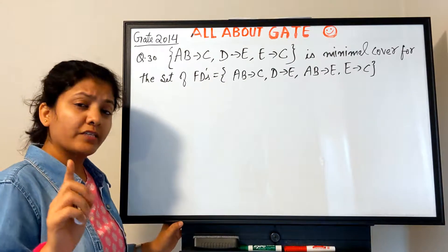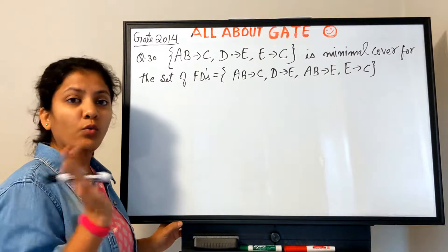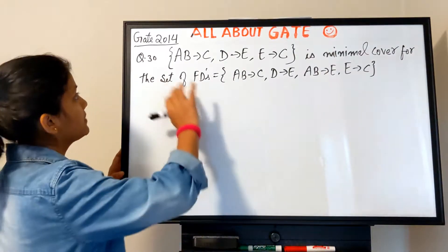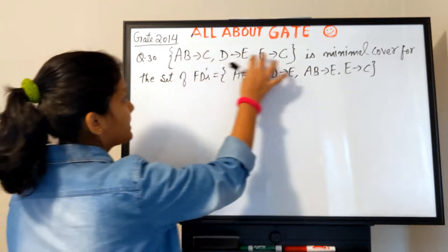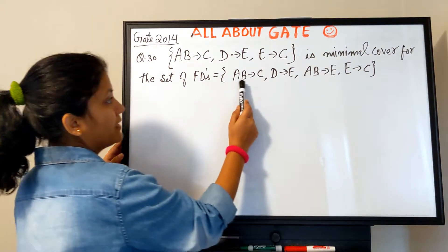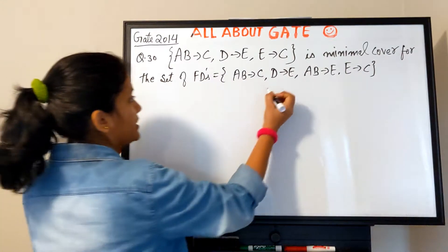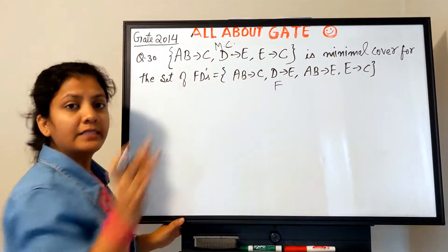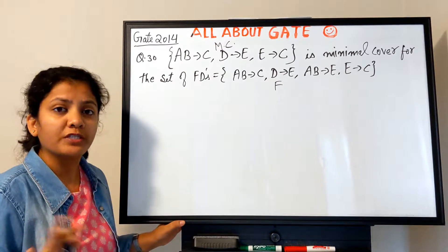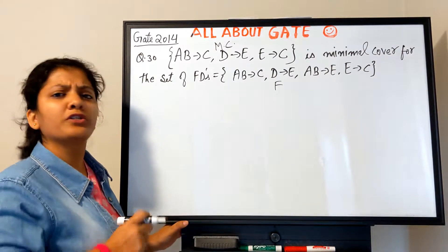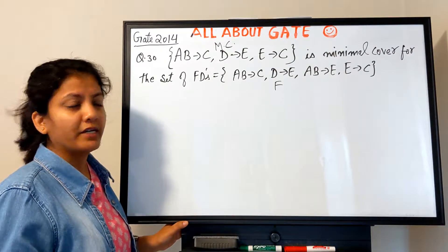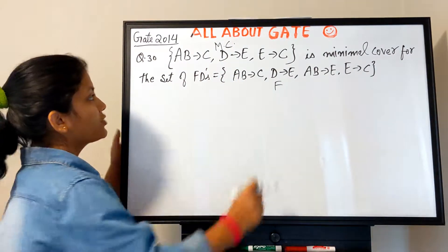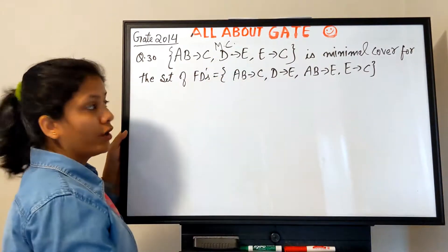The GATE 2014 question had two statements; I'm taking only the one about minimal cover since the other is about normal forms, which we haven't covered yet. Question 30 states that a given set is a minimal cover for a given set of FDs. The question asks: is this minimal cover correct? When the question asks you to verify — not find — the minimal cover, you just check whether what is implied by F is also implied by the candidate cover.